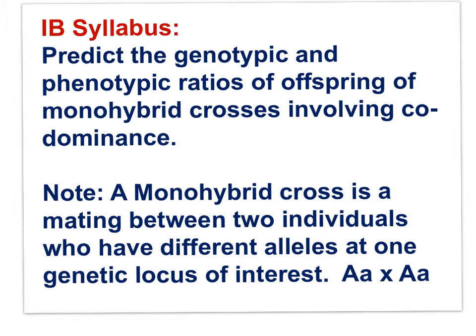Predict the genotypic and phenotypic ratios of offspring of monohybrid crosses involving codominance. Note: a monohybrid cross is a mating between two individuals who have different alleles at one genetic locus of interest. Both individuals are heterozygous, with different alleles at one genetic locus.